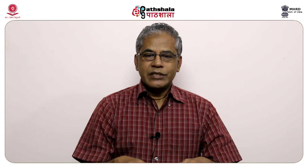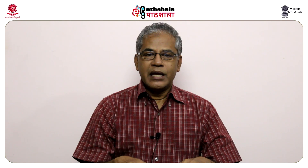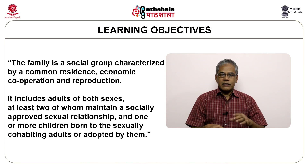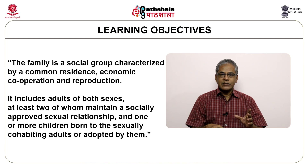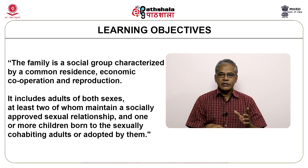According to the United Nations organization, family is seen as a natural and fundamental unit of society and is entitled to protection by society and the state. The United Nations organization states in chapter 1: the family is a social group characterized by a common residence, economic cooperation and reproduction. It includes adults of both sexes, at least two of whom maintain a socially approved sexual relationship and one or more children born to the sexually cohabiting adults or adopted by them.